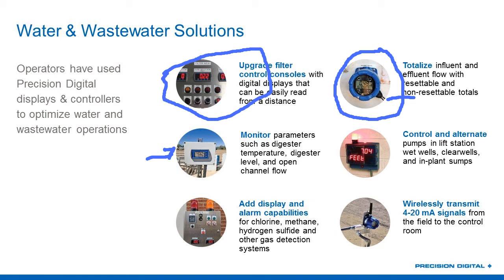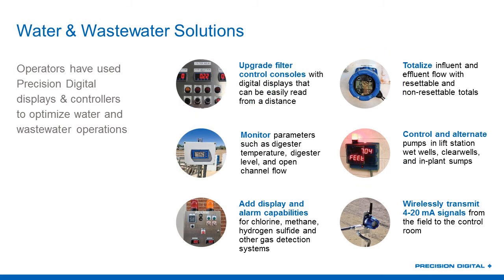You'll see that we monitor digester temperature, digester level, and open channel flow — a lot of open channel flow applications. We also do a lot of wastewater applications in industrial plants: pharmaceutical, food and beverage, and others. We can control and alternate pumps — we do a lot of pump control. In fact, if you go to www.pumpcontrol.com, you'll come to our website and see how we do pump control in lift stations, wet wells, clear wells, and sump plants.